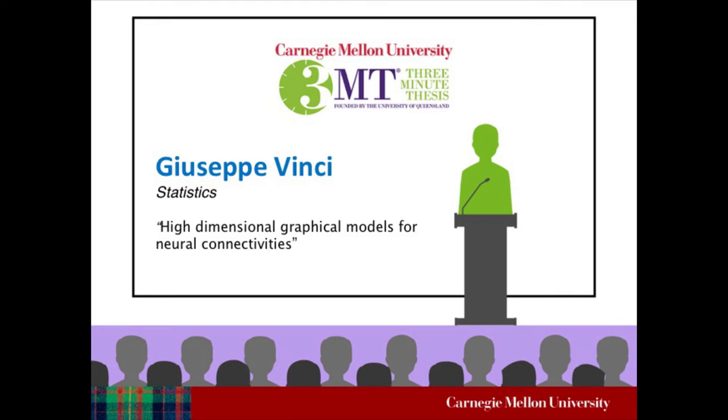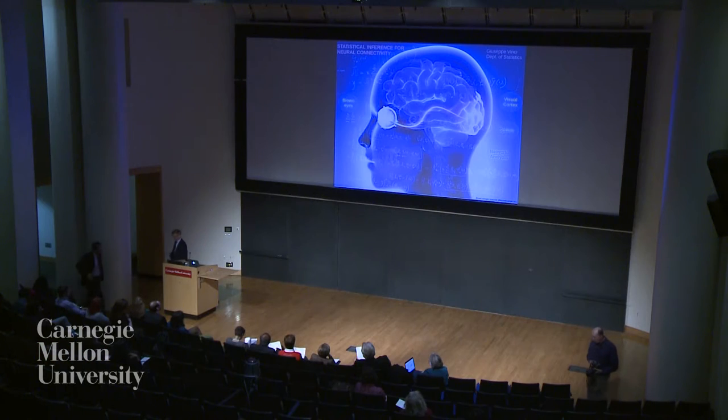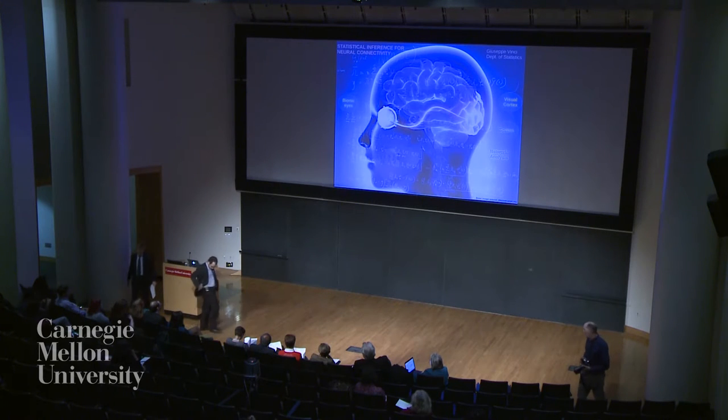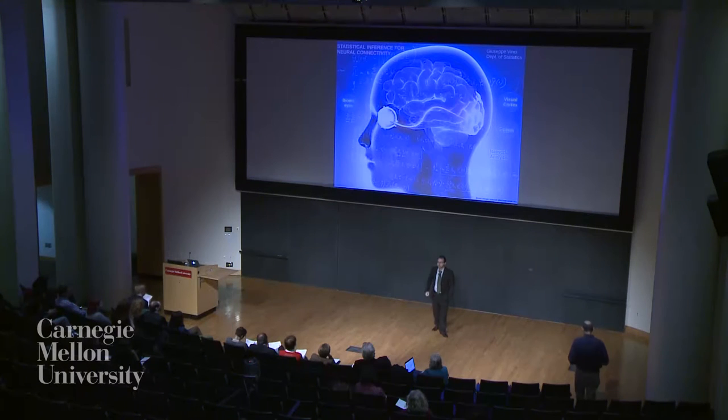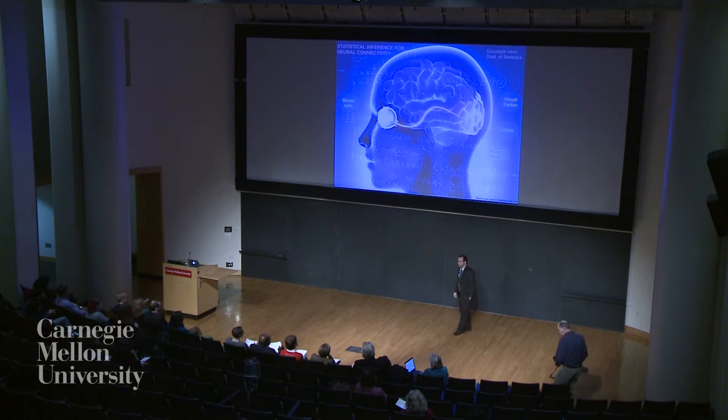Our next presenter is Giuseppe Vinci. His title: High-Dimensional Graphical Models for Neural Connectivities. I am a statistician and I have been working on the analysis of neural data for more than three years. Statistics and mathematical modeling is my passion and my work, and I spend most of my day writing formulas on my whiteboard in my office — formulas that try to explain how the brain works.